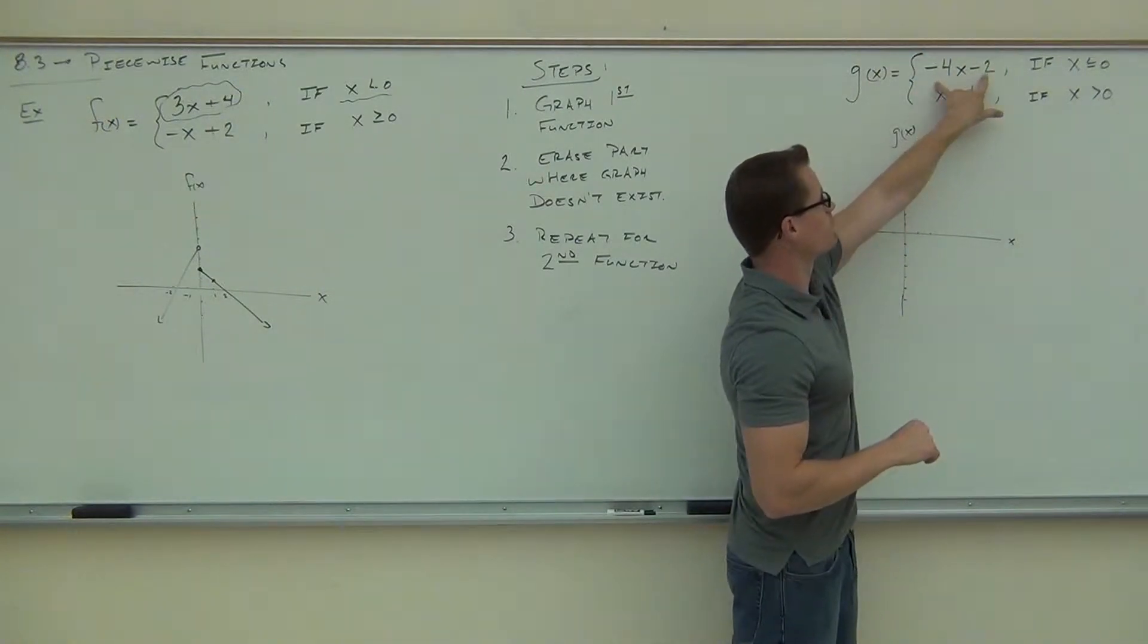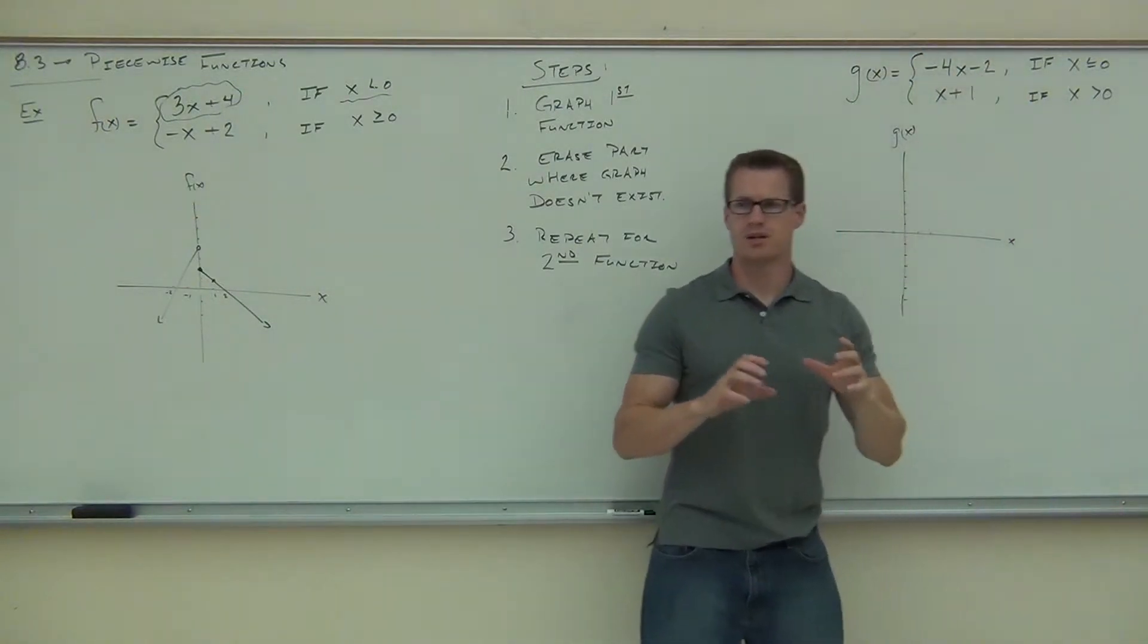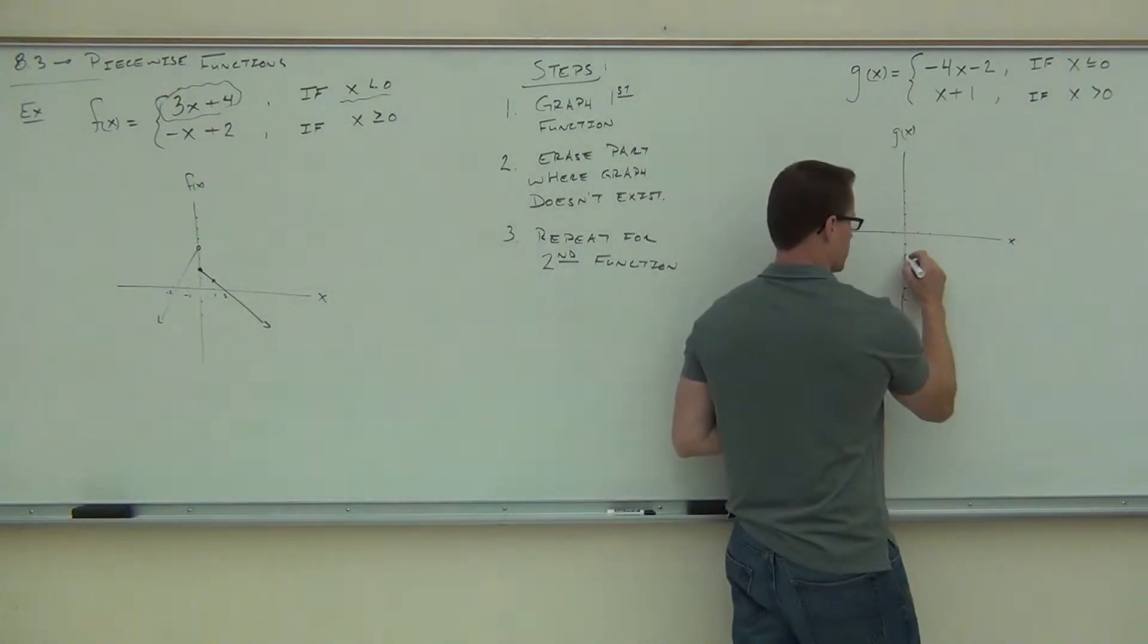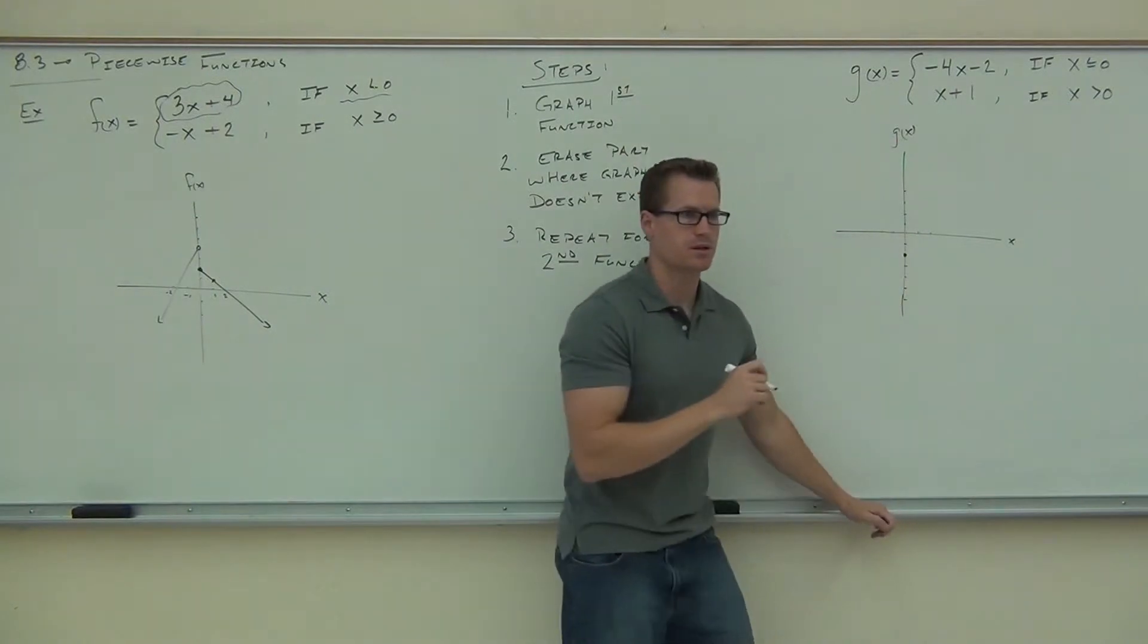Now we're looking at the negative 4x minus 2. What's your y-intercept for the negative 4x minus 2? Negative 2. That means I'm going to go down 2 and I'm going to put a point. Did you all get that far at least? Yeah. Good.